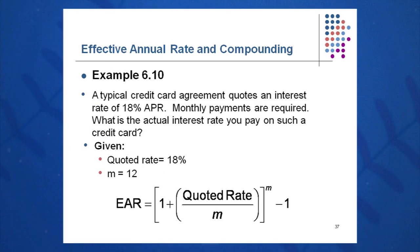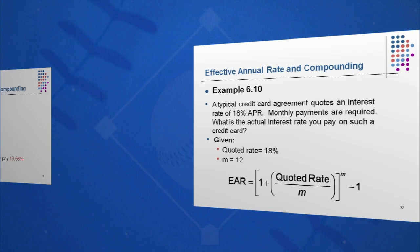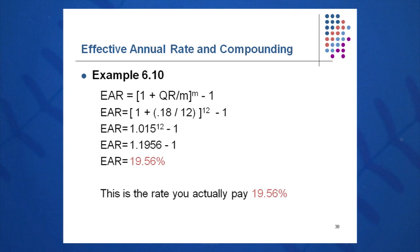Credit card companies may charge you, in this example, 18% APR. Monthly payments are required, compounded monthly. What's the actual interest rate you'll be paying? The quoted rate is 0.18, M is 12. I calculate the EAR: 1 plus 0.18 over 12 to the 12th power minus 1, and I get an effective annual rate of 19.56%. So you're actually paying almost 20% on this 18% credit card.